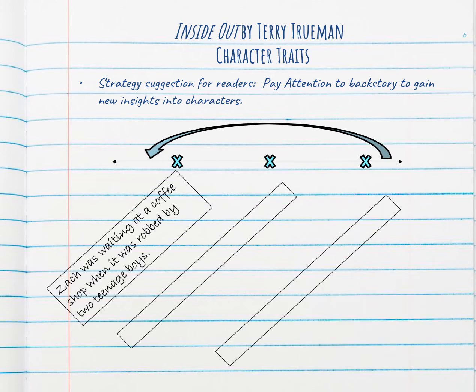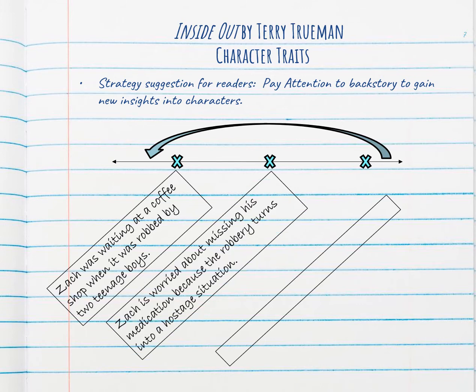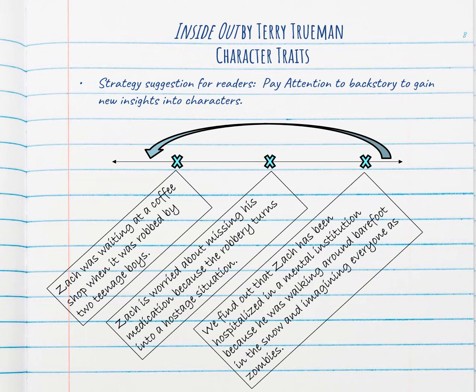Let's just look at an example that we already have from the story right now. Already, in this story, what's happened is that Zach was waiting at a coffee shop when it was robbed by two teenage boys. Zach is worried that he's missing his medication because the robbery is turning into a hostage situation. So the author informs us through Dr. Curtis's notes at the beginning of each chapter about Zach's past and about things that have happened to him before.